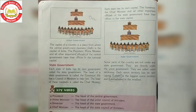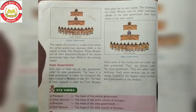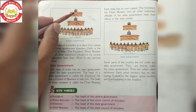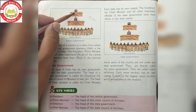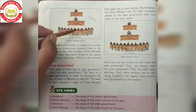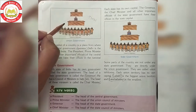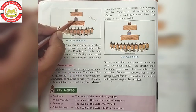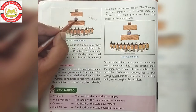So hamne kya dekha — central government ka structure kaisa hai? Sabse bade head ho gaye President, then iniki help ke liye council of ministers milte hain jo iniki help karenge, plus in council of ministers ke ek jo head hote hain, wo hote hain Prime Minister.